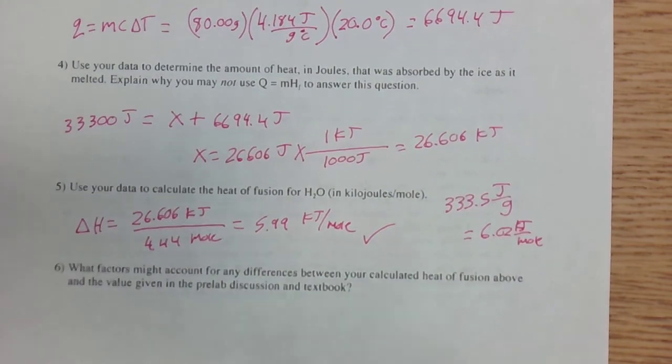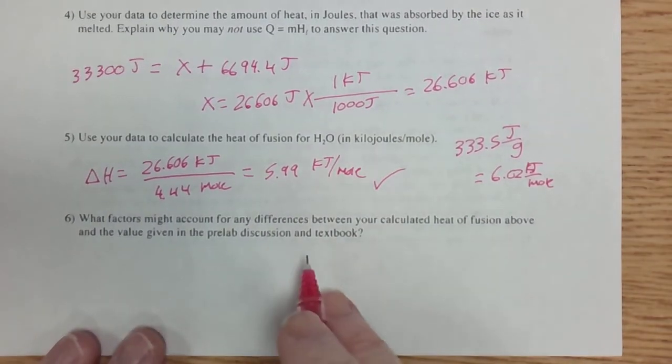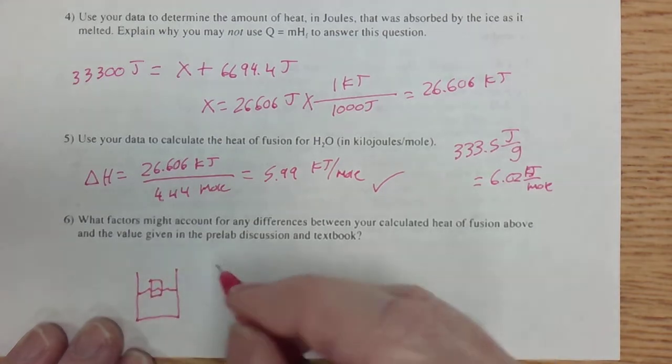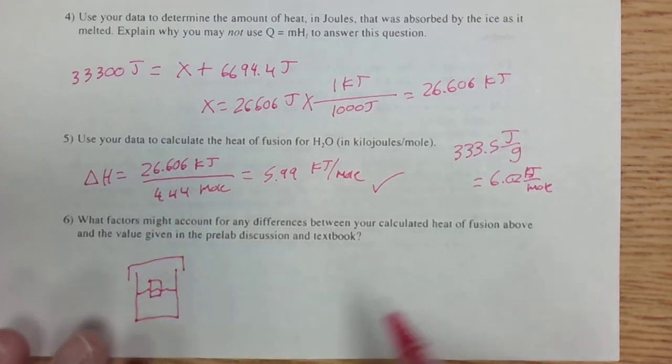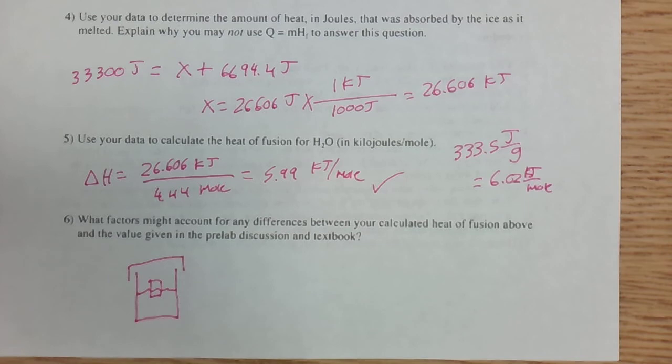A little bit lower than it should be, so let's talk about that. What happened here? Well, you had a nice styrofoam cup, and you had hot water in it, and you dropped in an ice cube, except you never put a lid on the cup. So if your number ends up being low, it's because heat was escaping through the top of the cup.